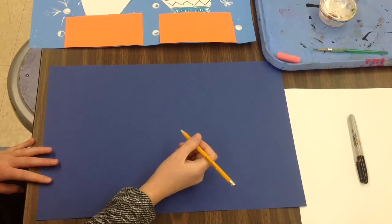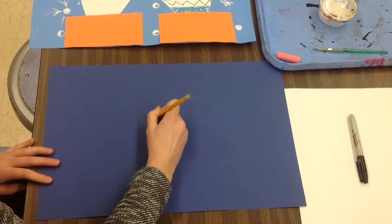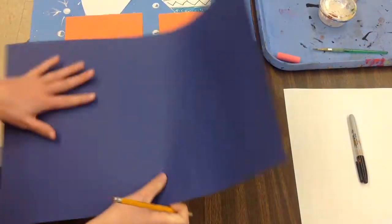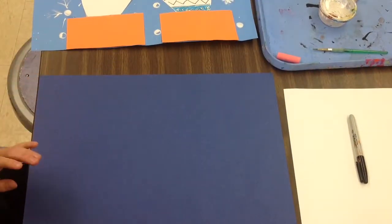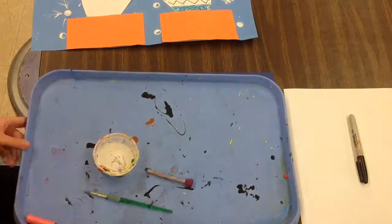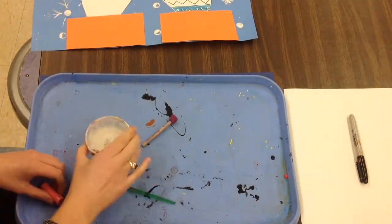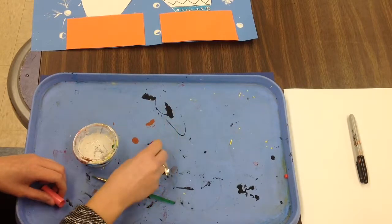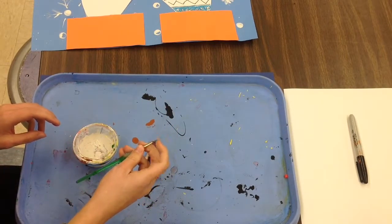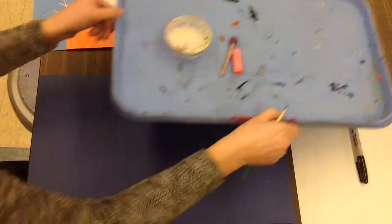So first I need to write my name and class code on the back. Miss G and my class code. I'm going to flip over my paper and start stamping. Now if I'm a number three chair, I need to get my materials for the day to share with my table. So I need white paint, a foam stamper, a plastic marker cap, and a skinny mini brush or two for my table to share.